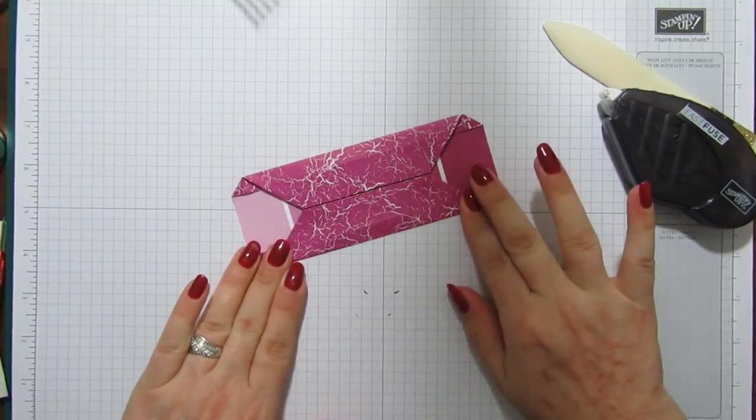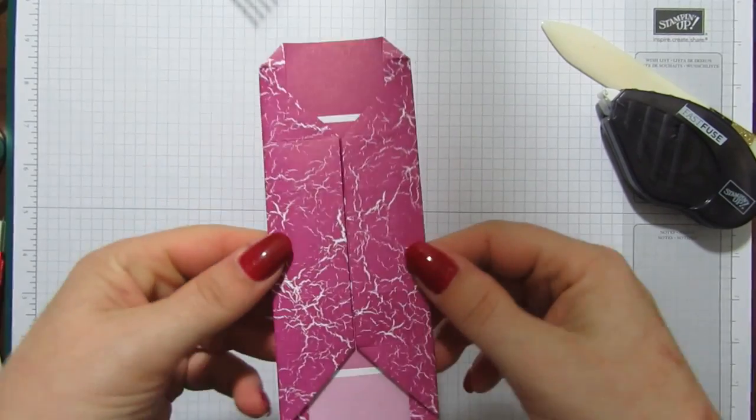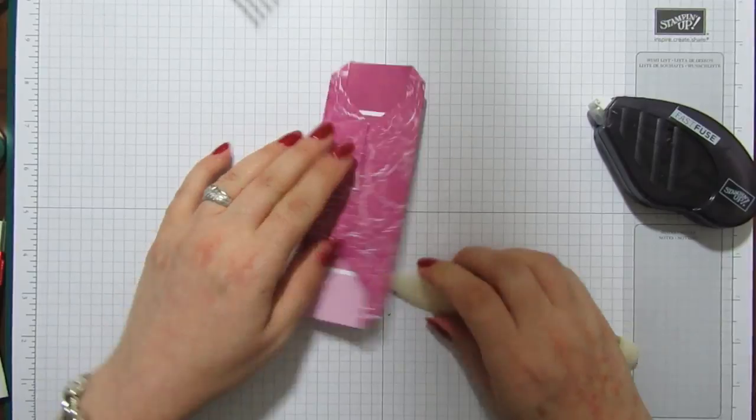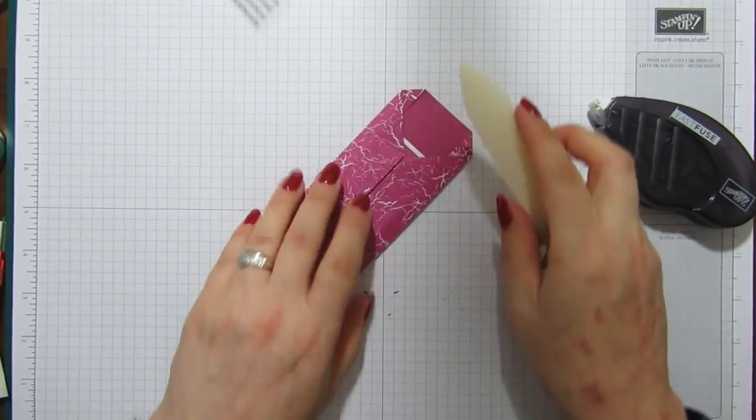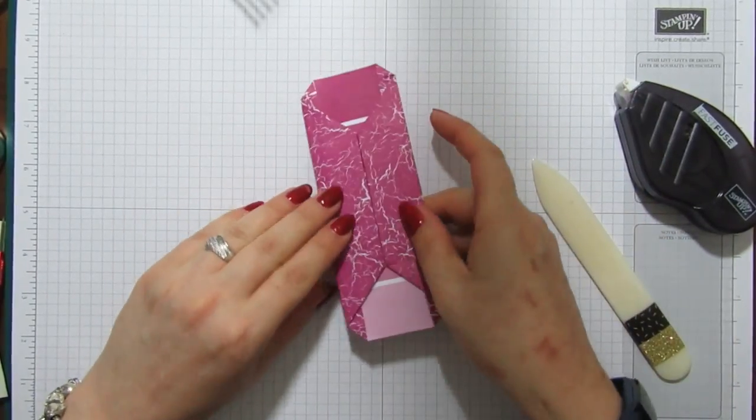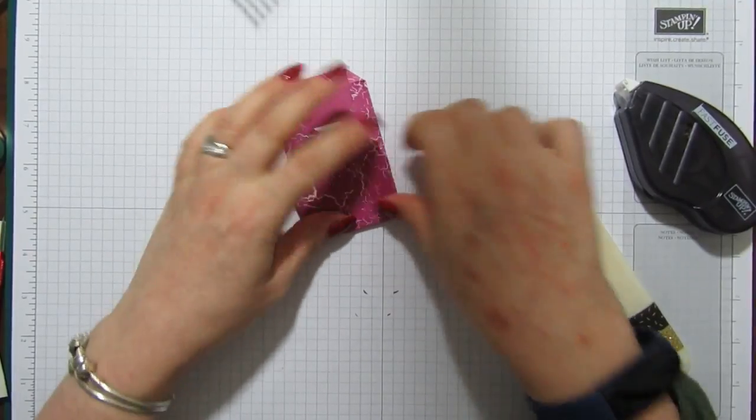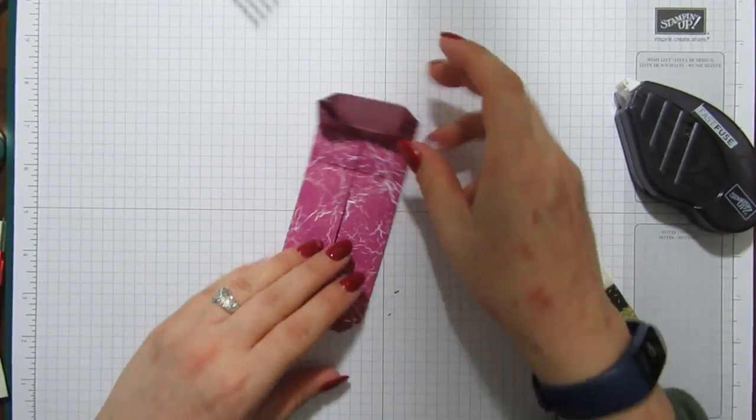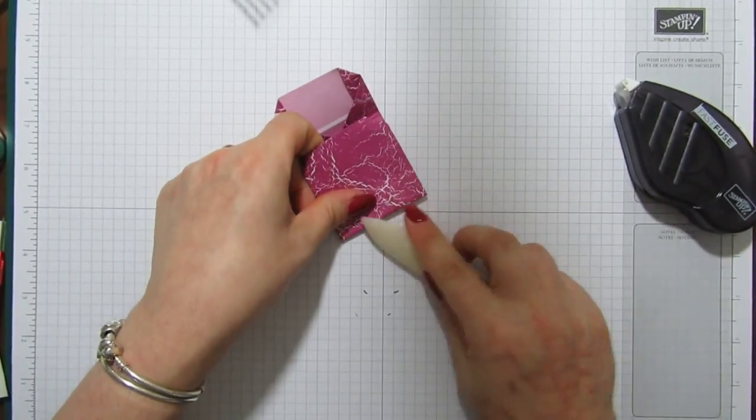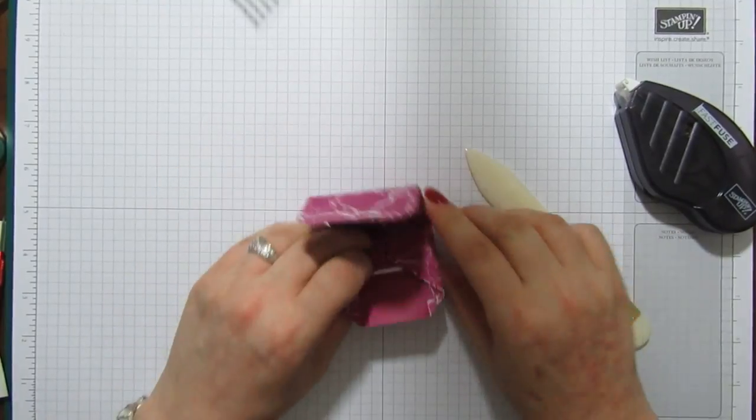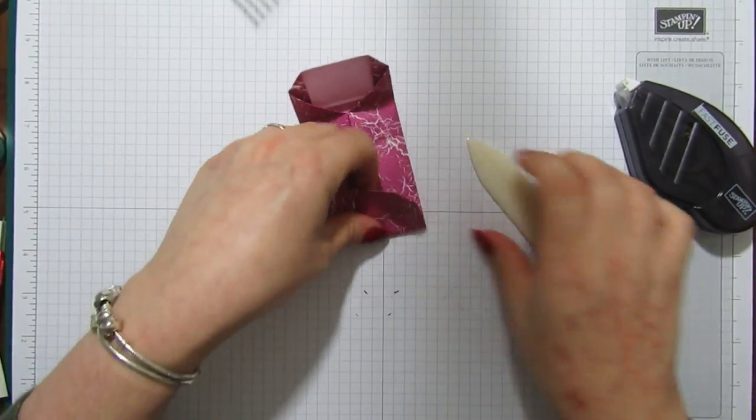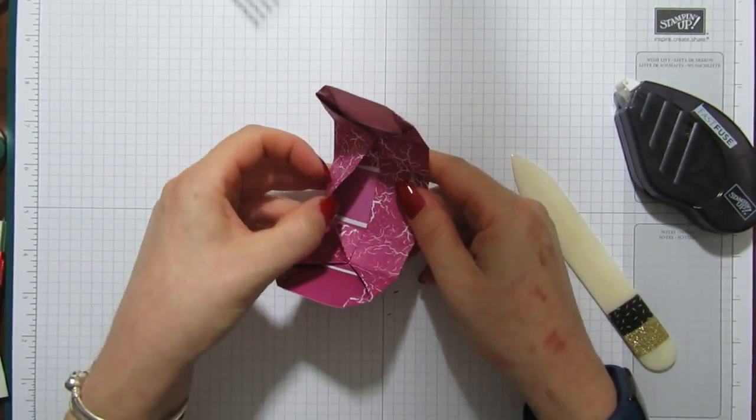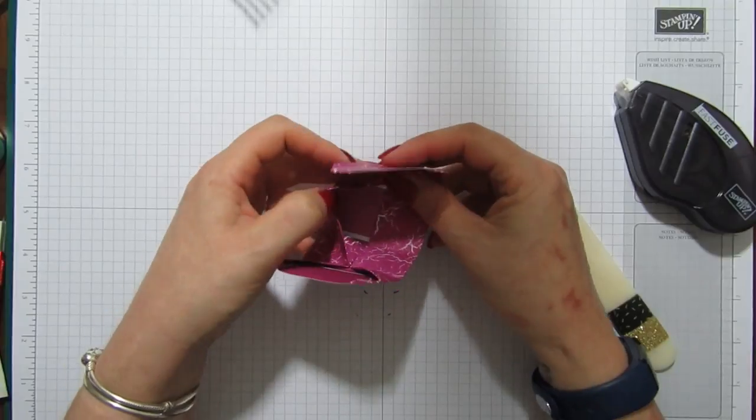So you've got a little score line there, just fold that and then fold it and it should kind of meet in the middle. So that's what you'll end up with. We'll just burnish them down. And then we're just going to start and fold it on these score lines here.